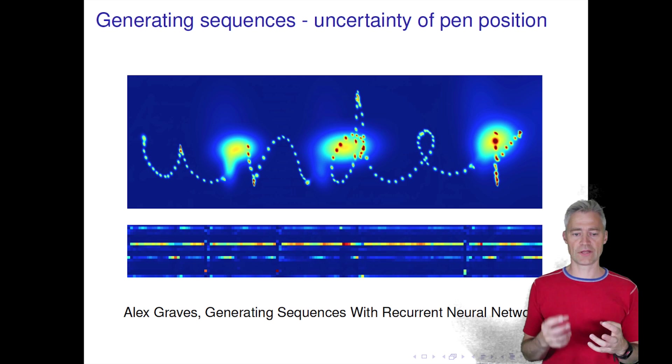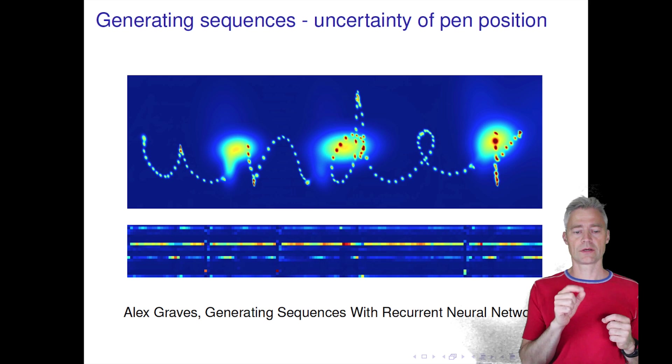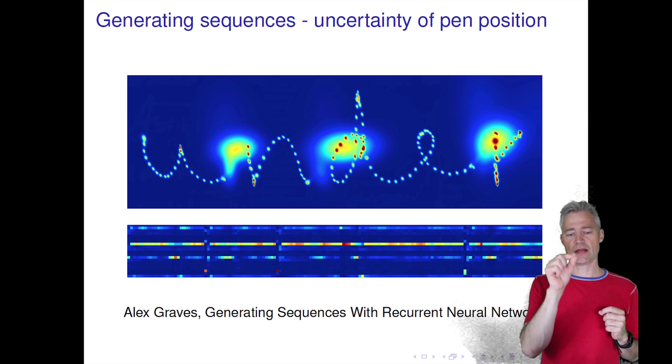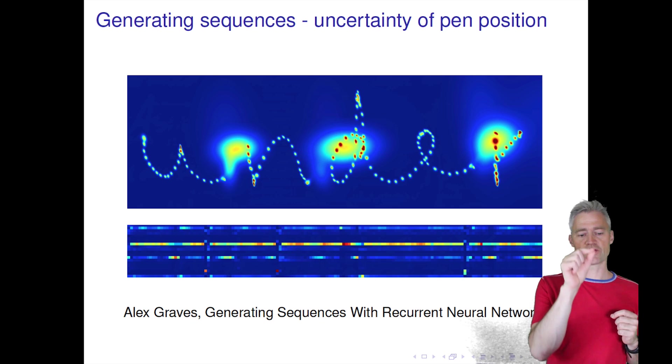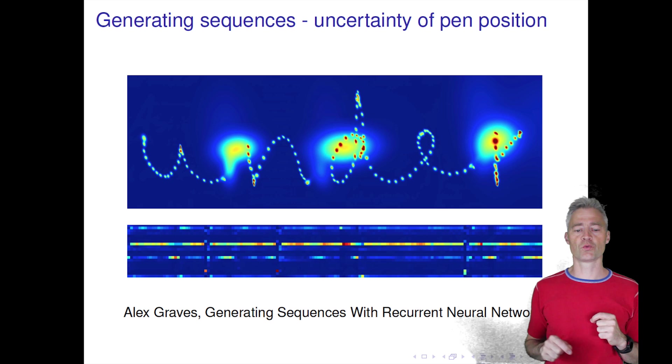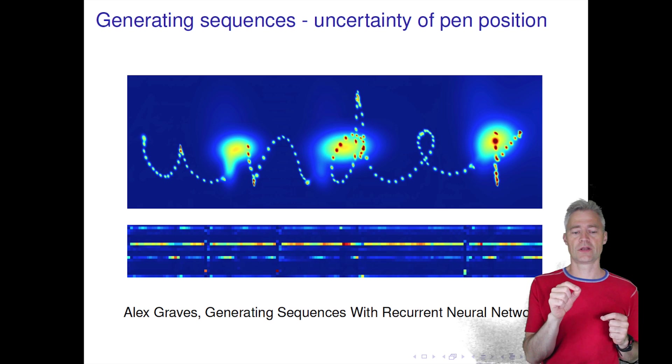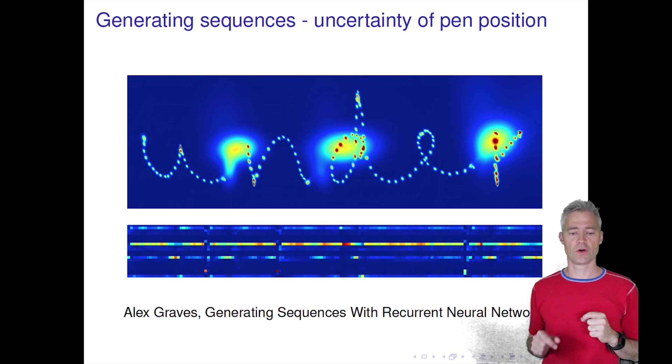Then the network actually learns about uncertainty. In this place we have written 'under' and you can see when we generate data, when we are in a letter like U, we are quite certain of where we are going, there's smoothness. But then when we finish the letter U, we are very uncertain about the next position of where we put down our pen.